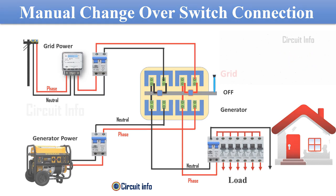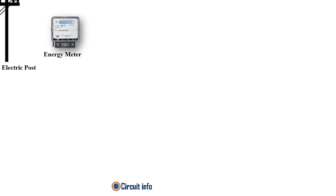A manual change over switch is used to manually transition from the main source of electrical supply to the generator source in case of a power outage, and prevents the power flowing back into the generator or grid.